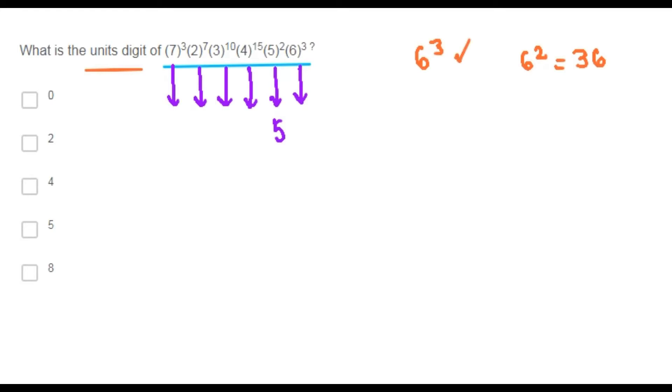Therefore, 6 cubed is 36 times 6, and it has a unit's digit of 6, as you can see.